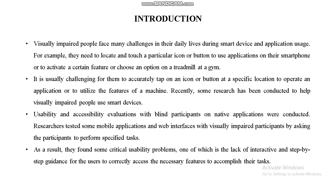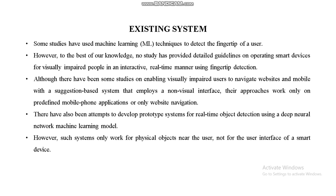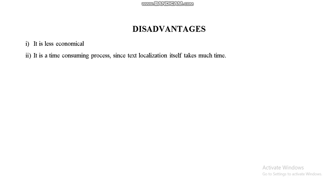In our introduction, as a result they found critical usability problems, one of which is the lack of interactive step-by-step guidance for users to correctly access necessary features in existing systems. Existing systems have also seen attempts to develop prototype systems for real-time object detection using deep neural network machine learning models, and studies on enabling visibly impaired users to navigate websites on mobile with suggestion-based systems employing a non-visual interface. These approaches work only on predefined mobile phone applications or only website navigation.